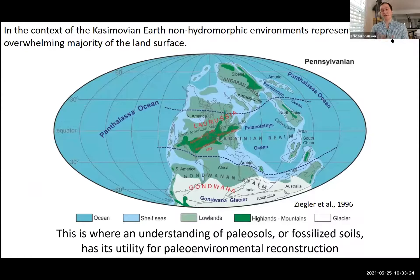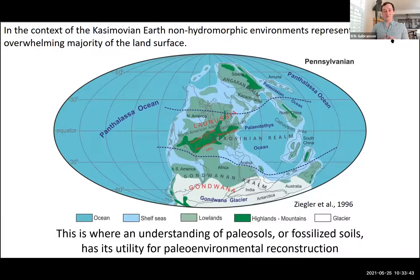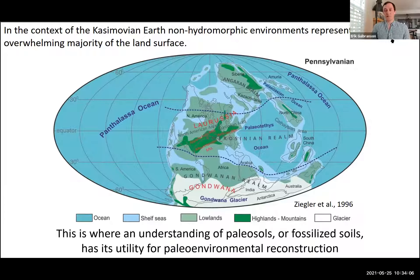This is a dated paleogeographic map. John just showcased the more current view of Gondwana glaciation, so the real estate looks quite different. The key point is that there's a lot of real estate for non-hydromorphic upland soil development, both in Pangaea and in Gondwana. A lot of work has been done in the paleo-equatorial realm, but there are many more emergent intracratonic basins that might preserve Casimovian paleosols. One challenge will be accurate chronostratigraphy and biostratigraphy to constrain those ages.